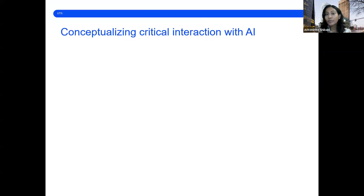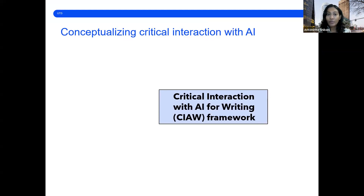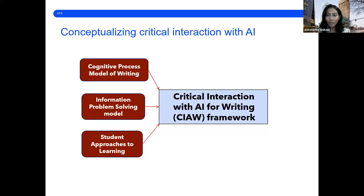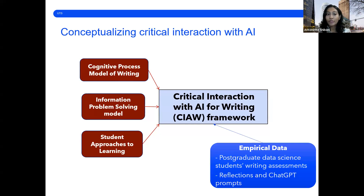In our work, we conceptualize critical interaction with AI for writing using a framework. We derive it from theoretical models in writing, information problem solving, and student approaches to learning, and empirical data from authentic student assessments. This includes students' reflections on their use of ChatGPT for writing support and their prompts to the tool.